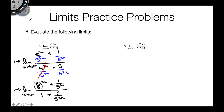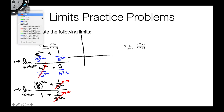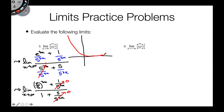Now we can evaluate the limit. 1 over 5 to the 3x goes to 0. The base here is e over 5, which is less than 1 — so we have exponential decay. The graph of exponential decay always approaches 0 as x gets bigger and bigger. So as x goes to positive infinity, (e over 5) to the 3x also goes to 0. That leaves us with 0 over 1, which equals 0 — that's problem 5.